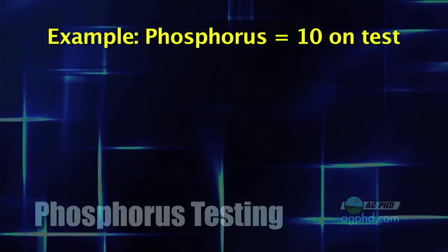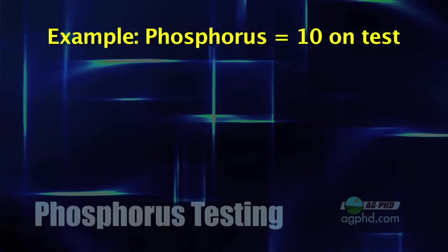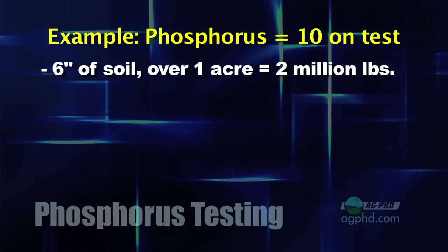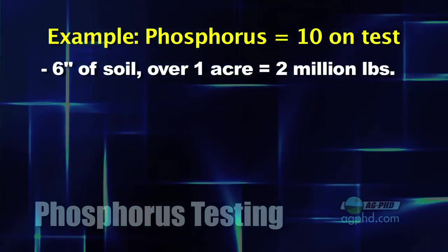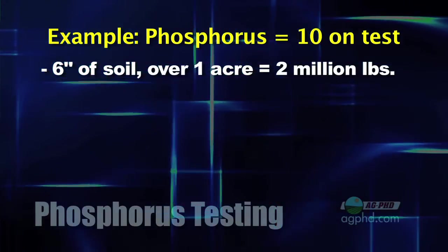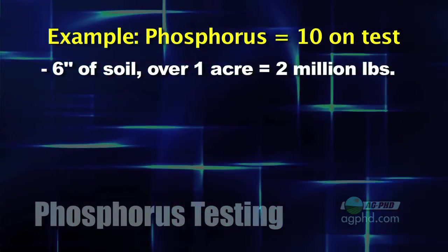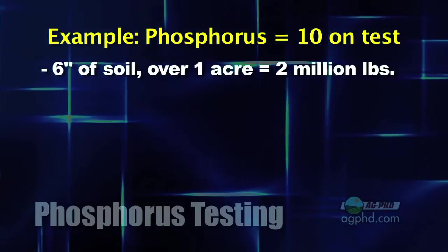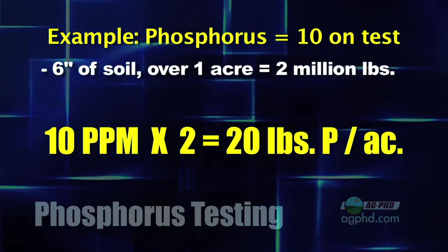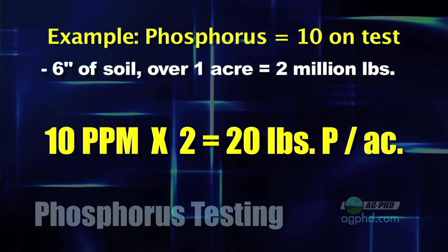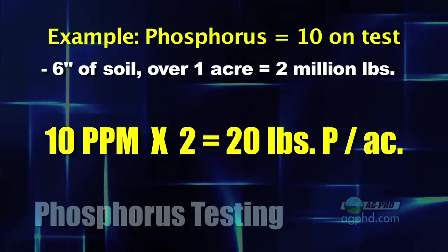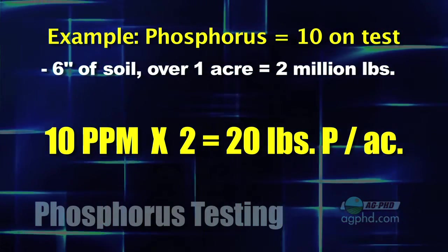If you see a number of 10 on your soil test, what does that tell you? Here's an important thing to remember: in six inches of soil on an acre you've got about 2 million pounds of total soil. So for a parts-per-million test, just multiply that number times 2 — that tells you roughly how many pounds per acre of phosphorus you have. A reading of 10 PPM means approximately 20 pounds of phosphorus per acre.